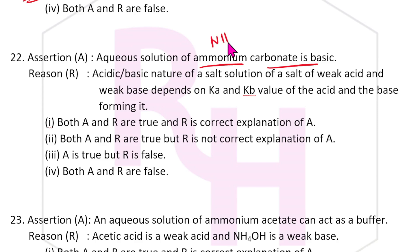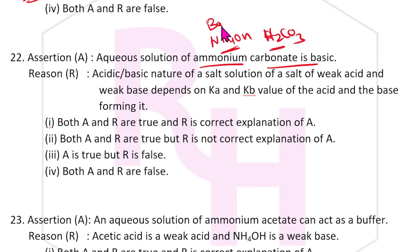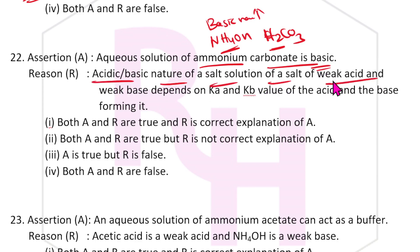Twenty-second question: Aqueous solution of ammonium carbonate is basic — correct. Ammonium carbonate contains NH₄OH and H₂CO₃; the basic nature is more dominant here. For a salt of weak acid and weak base, the nature (acidic/basic/neutral) depends on Ka and Kb values — this is also correct. The answer is option 1.